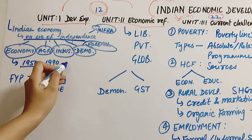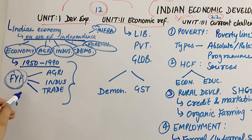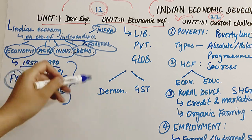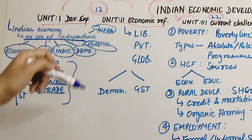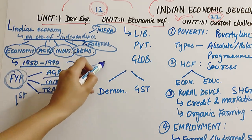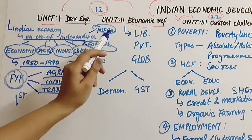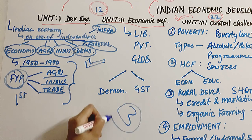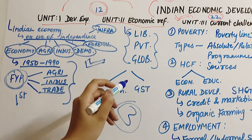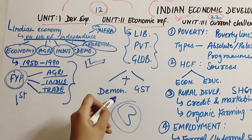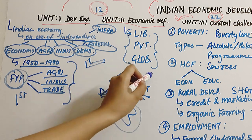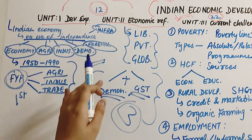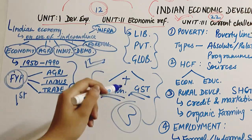For the second chapter in Unit 1, covering India from 1950 to 1990, we need to know the 5-year plans — what was the first and second five-year plan. There are separate paragraphs on agriculture, industrial and trade policy, which we have to read. Coming on to Unit 2, we need to cover 3 topics: liberalization, privatization and globalization. CBSE has also added demonetization and GST, so do not forget to read upon these two topics as well.